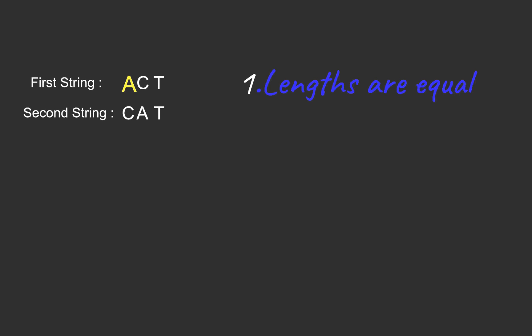We pick the first character A and check if it is present in the second string — yes, it is present. So we move forward in the first string and pick the next character C, and check whether it is present in the other string — yes, it is present. Now we move to the last character T and check whether it's present in the second string — it is. So we see that all the characters are matched. Hence, the two given strings are anagrams.